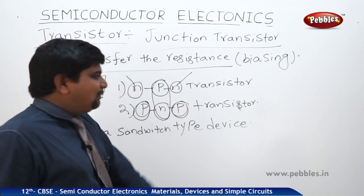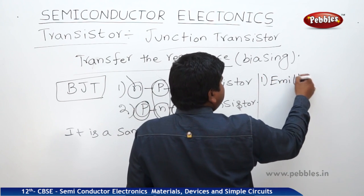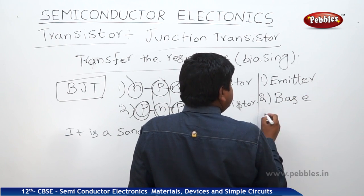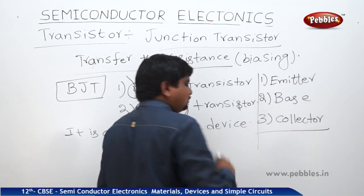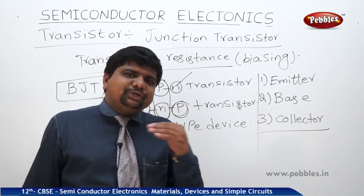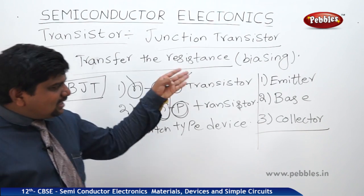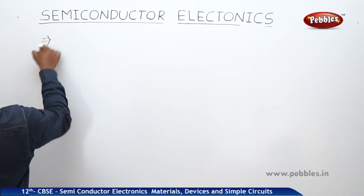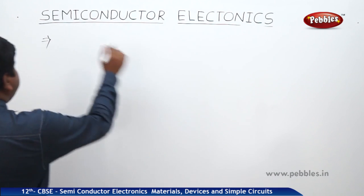These transistors have three main parts: first, the emitter; next, the base; and then the collector. The doping properties differ for each, since N-type and P-type semiconductors are formed through doping. Whether NPN or PNP, the transistor always has these three parts: emitter, base, and collector.